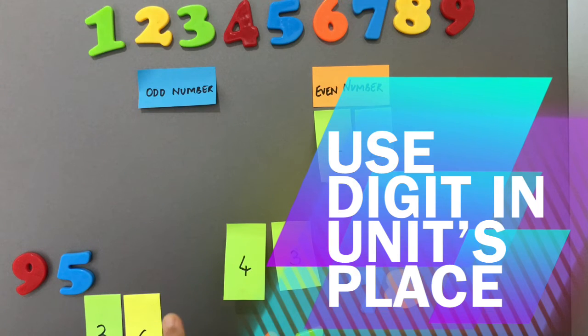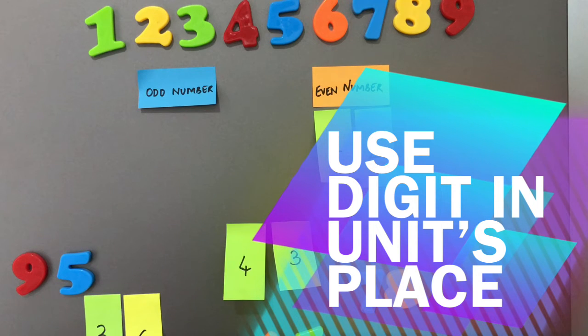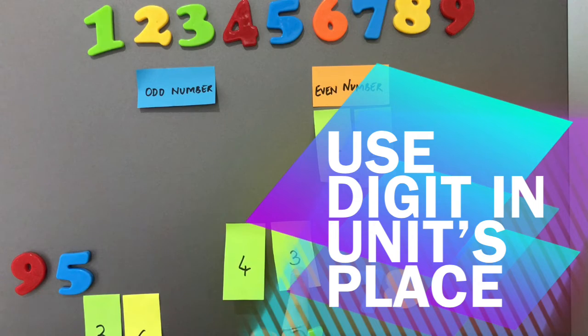So now I am looking at the number forty three. So I am only supposed to look at the units place. Because of course I can't have forty three manipulatives to kind of form pairs. So I am just going to look at number three.